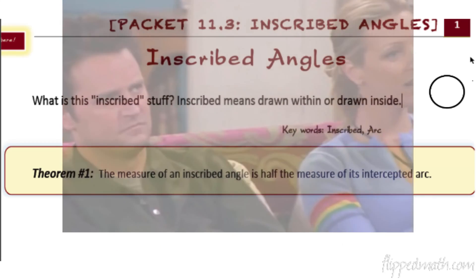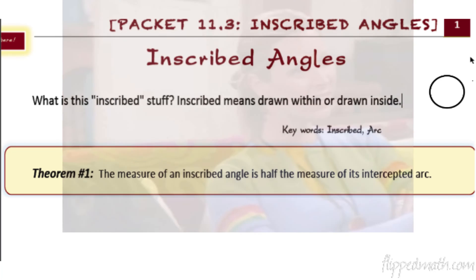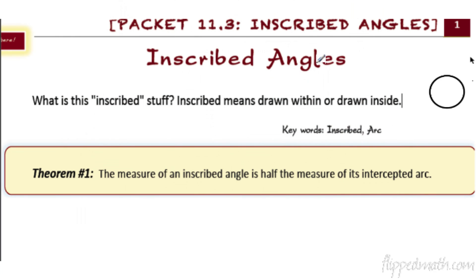What are inscribed angles? Inscribed means that it's drawn on the inside. So let's take a look here. We have a circle. If I draw an angle on the inside of the circle — ta-da — that's an inscribed angle.